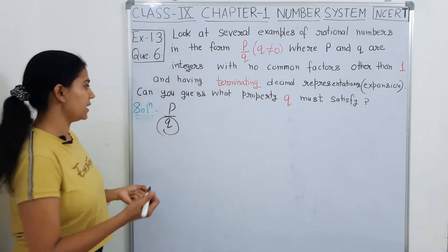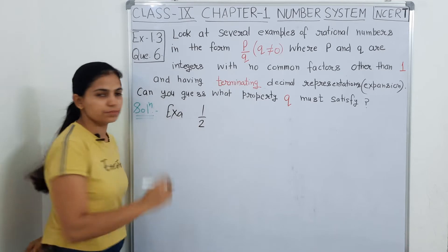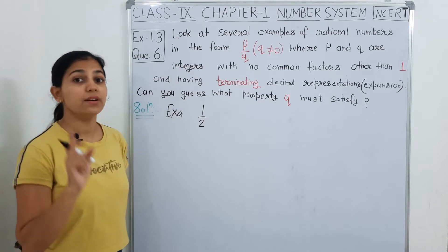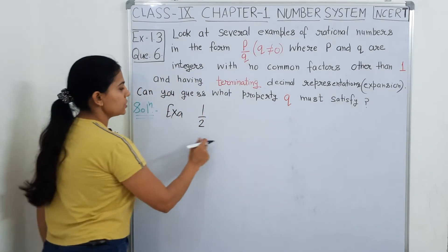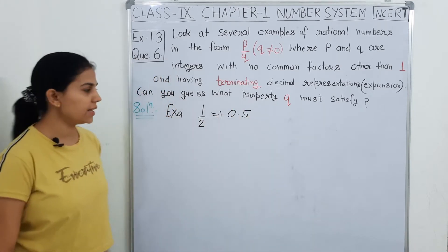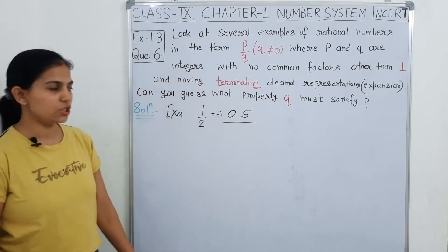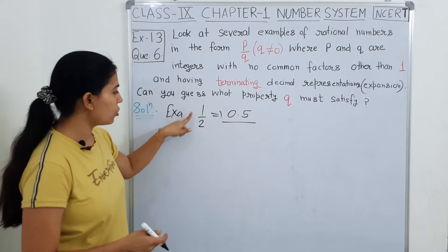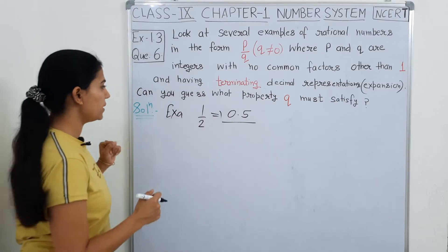तो कुछ examples करके देख लेते हैं हम. मानलो हमने example ले लिया कि 1 upon 2. अब 1 upon 2 में सबसे पहले तो इन दोनों का कोई common factor नहीं है 1 के इलावा — तो ये वाली property हमारी हो गई solve. दूसरी बात, इसकी जो decimal expansion आएगी — 0.5 — तो ये decimal expansion terminating decimal expansion है ना? तो ये 1 upon 2 जो है P upon Q की form में भी है, plus इनका common factor भी 1 के इलावा कोई और नहीं है, और decimal expansion भी terminating है.